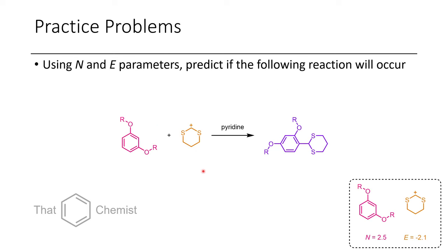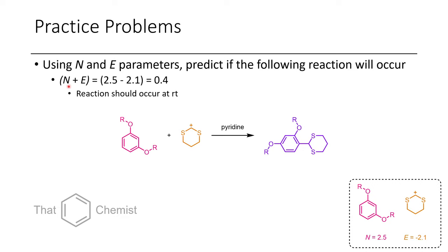In the next problem, I asked you to use N and E parameters for this electrophile and nucleophile to predict whether the reaction will occur. The easiest way to get a simplistic understanding of whether this reaction would kinetically occur is to add the sum of N and E. If it's more than negative 5, it will usually occur very easily at room temperature. Here we get a sum of 0.4, so this reaction should occur easily at room temperature.